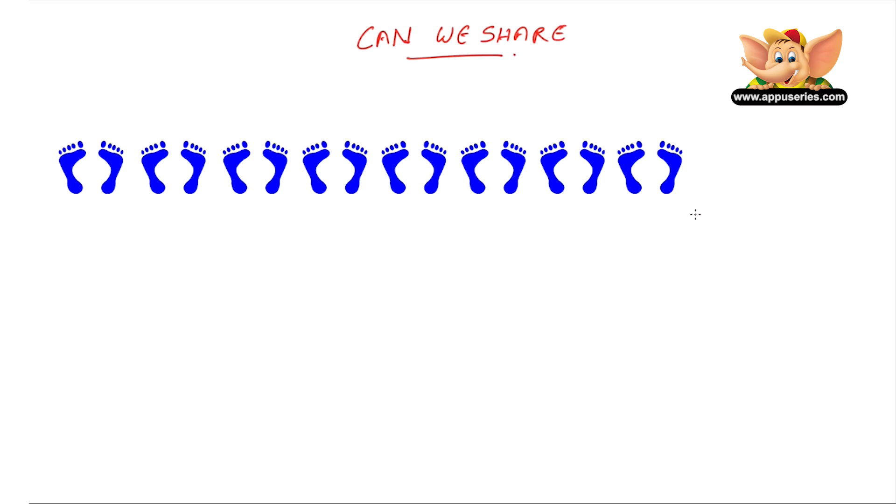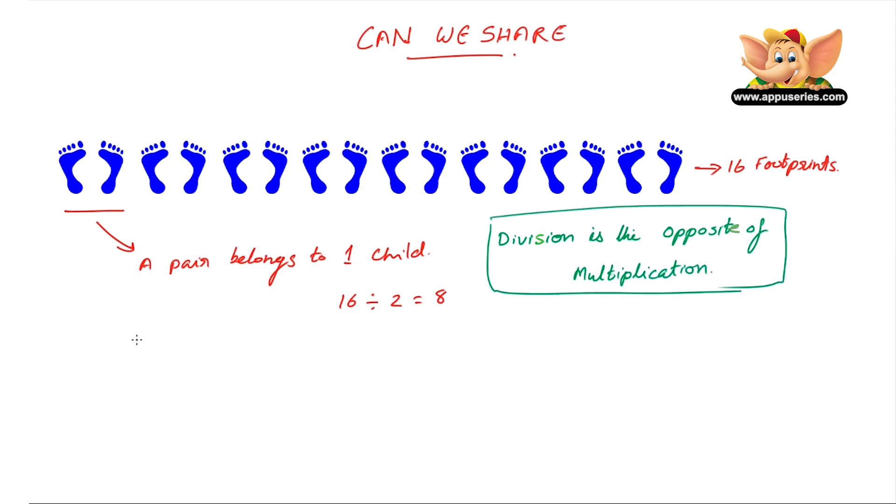Now let's try a tricky one over here. Here are 16 footprints. How many kids do you think we have over here? Now we know that a pair belongs to one child. So we can divide 16 by 2, which is 8. Or we can also do it another way. Remember division is the opposite of multiplication? So for example, if 16 divided by 2 equals 8, then 8 times 2 equals 16.